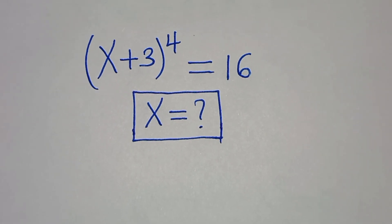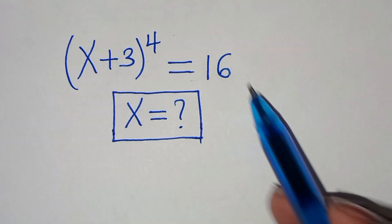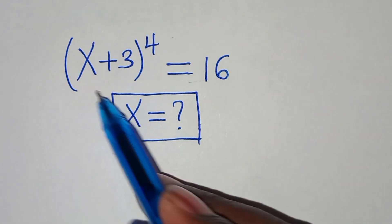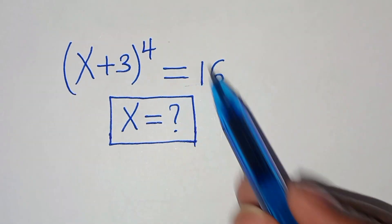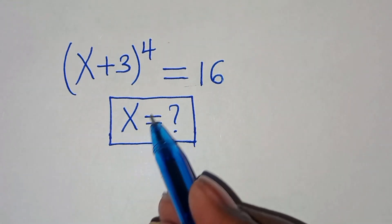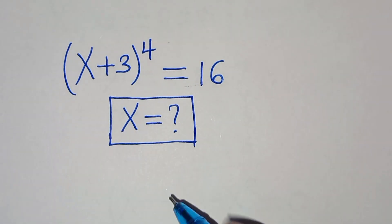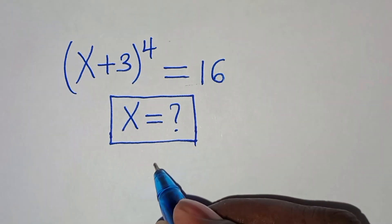Hello everyone, you are welcome to solve this nice algebra problem which is x plus 3 to the power of 4, this is equal to 16. So what are the values of x?